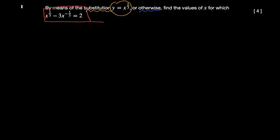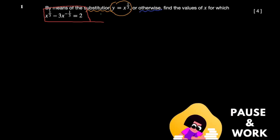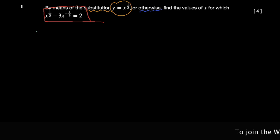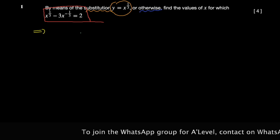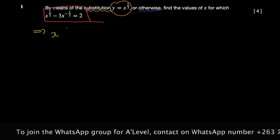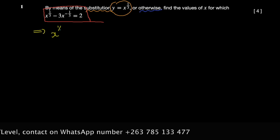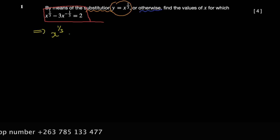I'm going to show you both methods — by substitution and also a technically quicker method. For the substitution method, you prepare by identifying x^(1/3) explicitly in the expression. This term is already x^(1/3), which is fine. But this other term, x^(-1/3), is not yet in the right form.